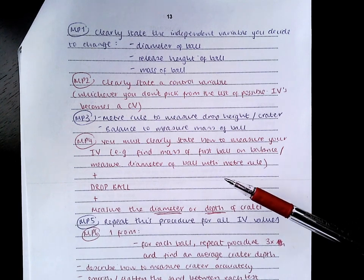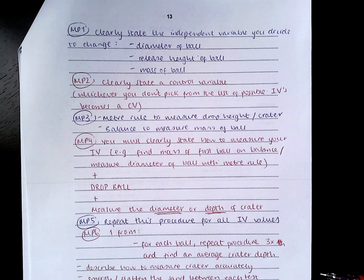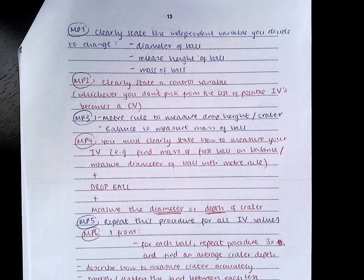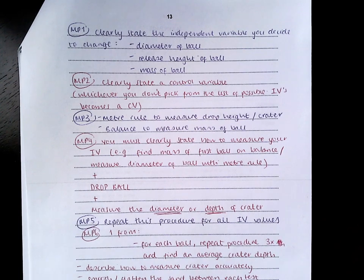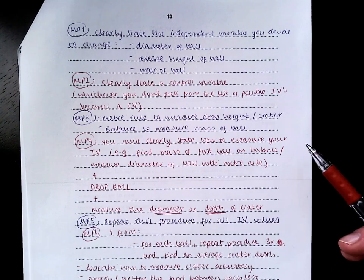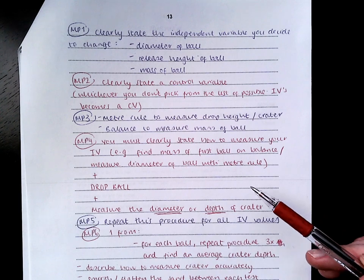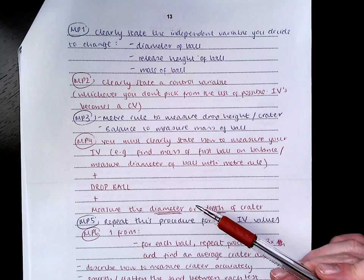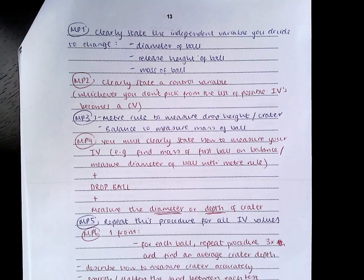For mark point four, you actually needed three distinct bits of information. You needed to clearly state how to measure your independent variable. I need to measure it first with a meter ruler. This is never something that happens in real life. We have to measure our independent variable. Find the mass of your first ball on the balance. Measure with a meter ruler the first height that you will drop the ball from. Once you've made that measurement, you need to say drop the ball into the sand. And then the third thing is measure the diameter of the crater produced in the sand or the depth. But you needed to be specific. If you said measure the size of the crater, you're not getting the mark.